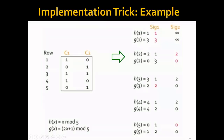Then we go through to the second row. We hash the original row index 2 using the two hash functions, and we get 2 and 0. We go back to the second row to check C1 and C2. Since only C2 has a 1 here, we only need to update the signature for C2. We compare 2 and 0 with the current values of 2 and infinity, and find that 0 is actually smaller. Therefore, we update 2 and infinity to 2 and 0.